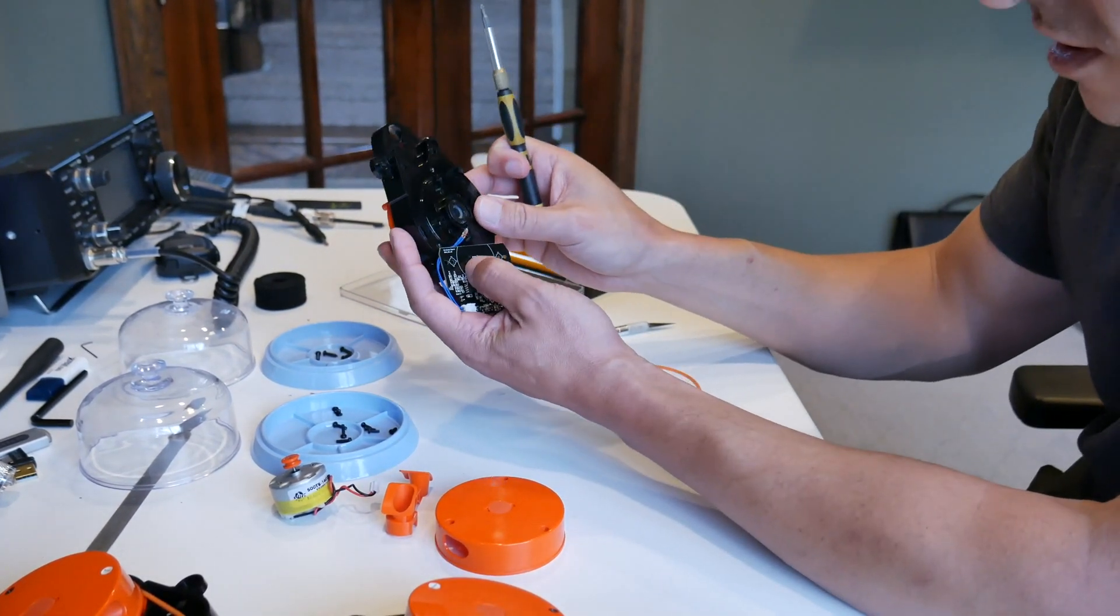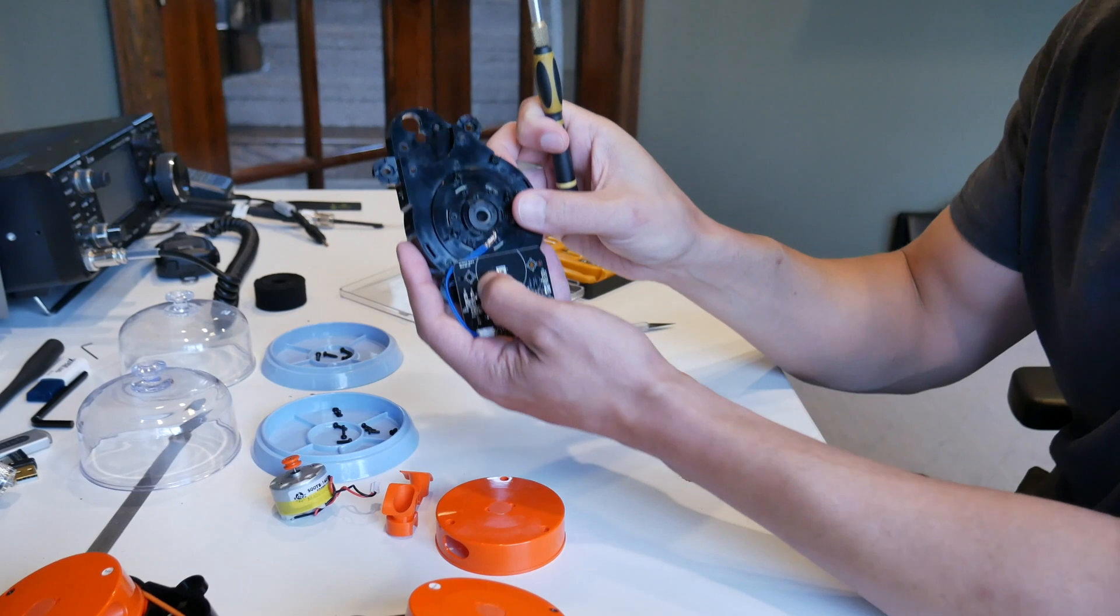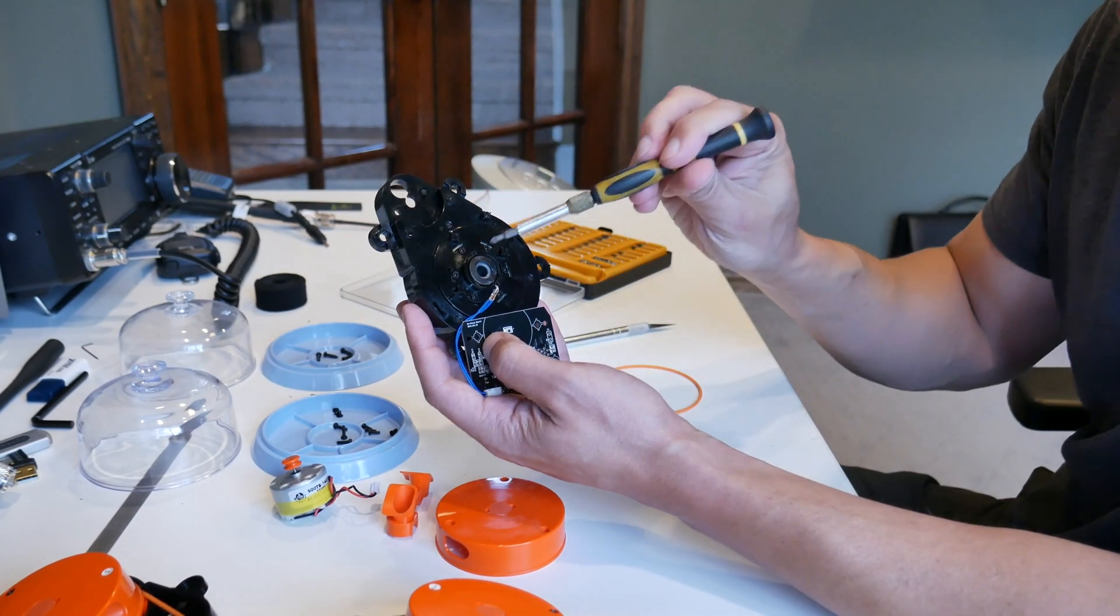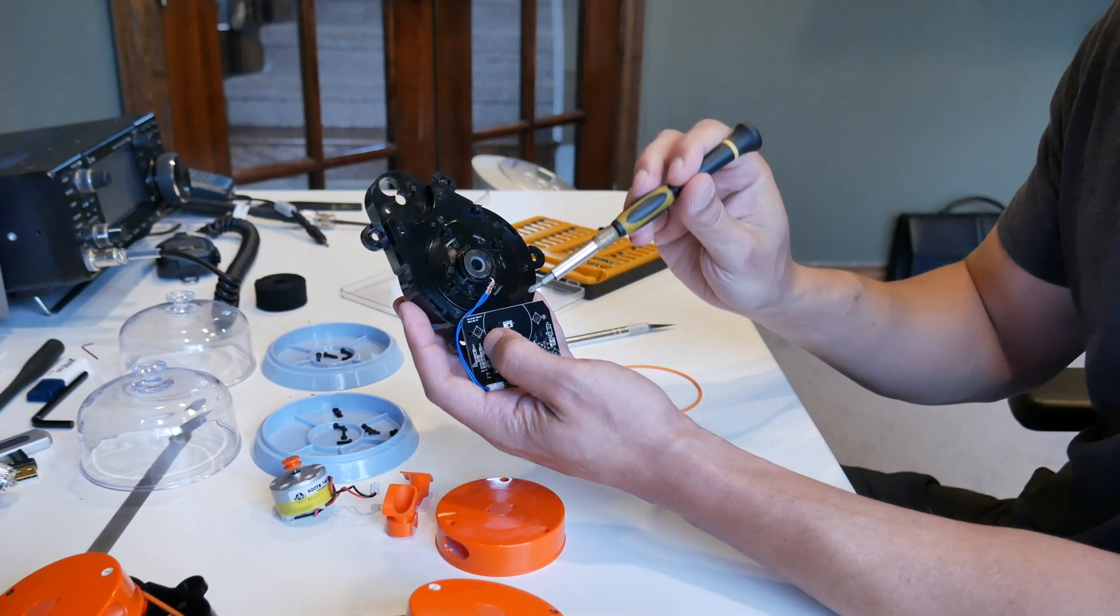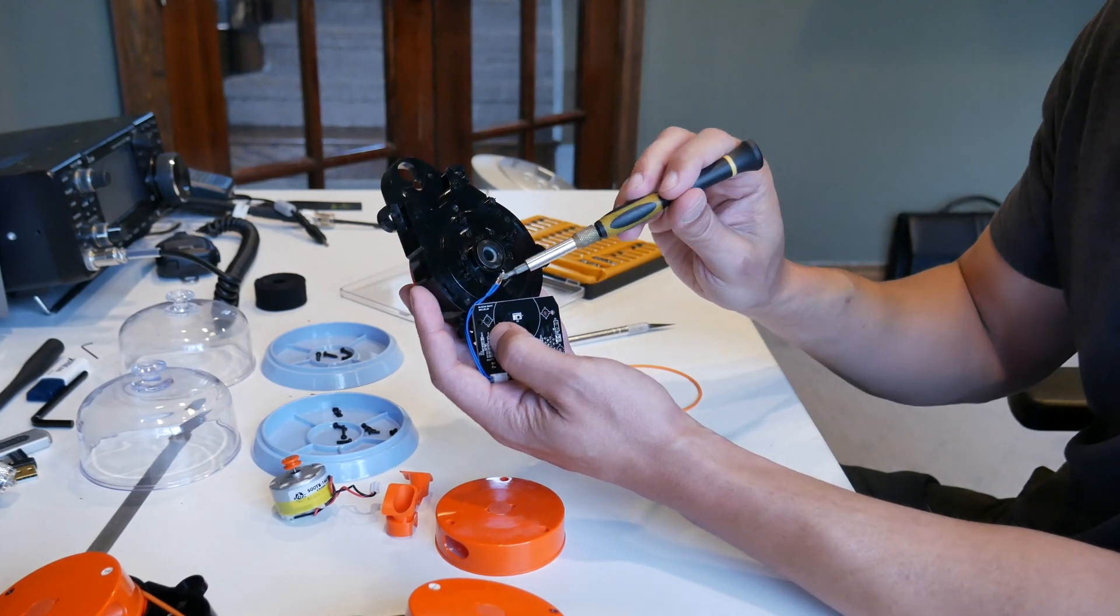On the bottom, the way they send data through is by an LED and a diode. There's an LED on the top that's shining light through that hole to that little diode on the bottom there.